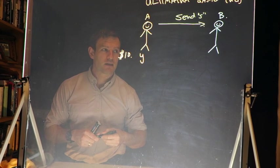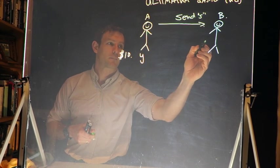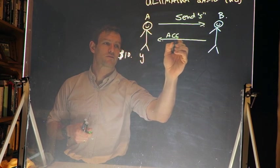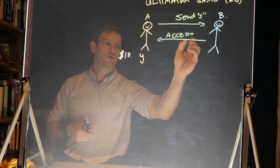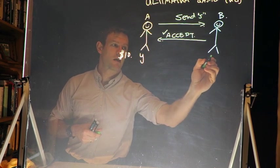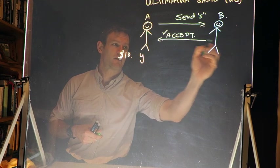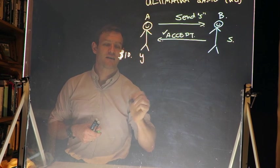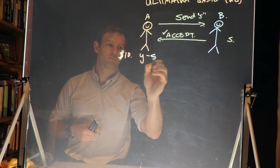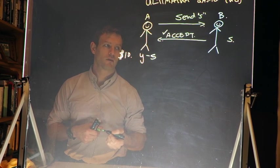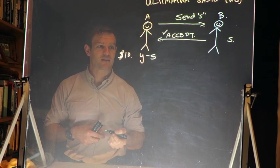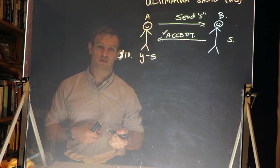If player B accepts the offer, then what happens is they say back, OK, I will accept your offer. Then B gets to keep S dollars, and A gets to keep Y minus S dollars. So B keeps the amount that was sent to them, and A gets Y minus S dollars that they then keep.